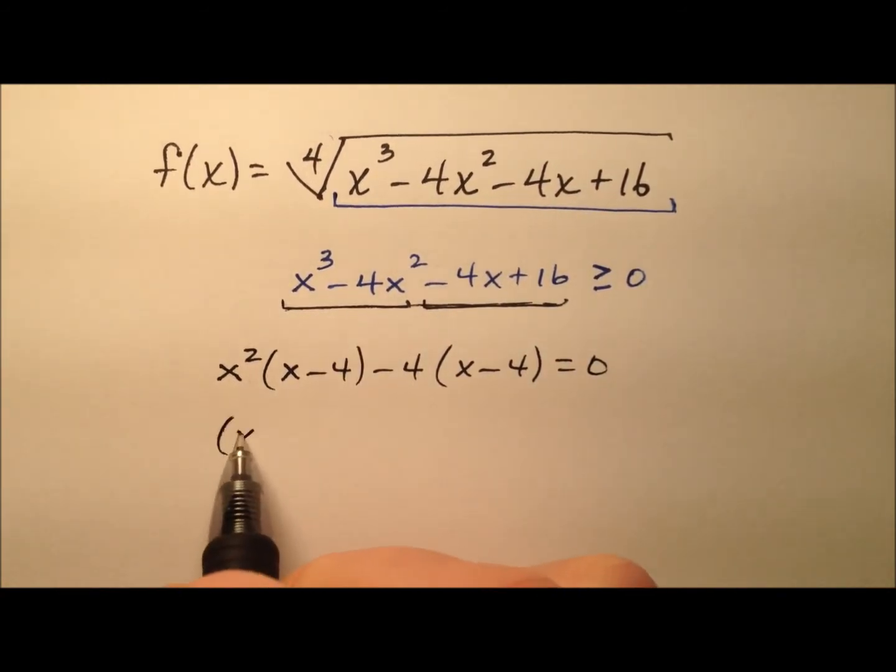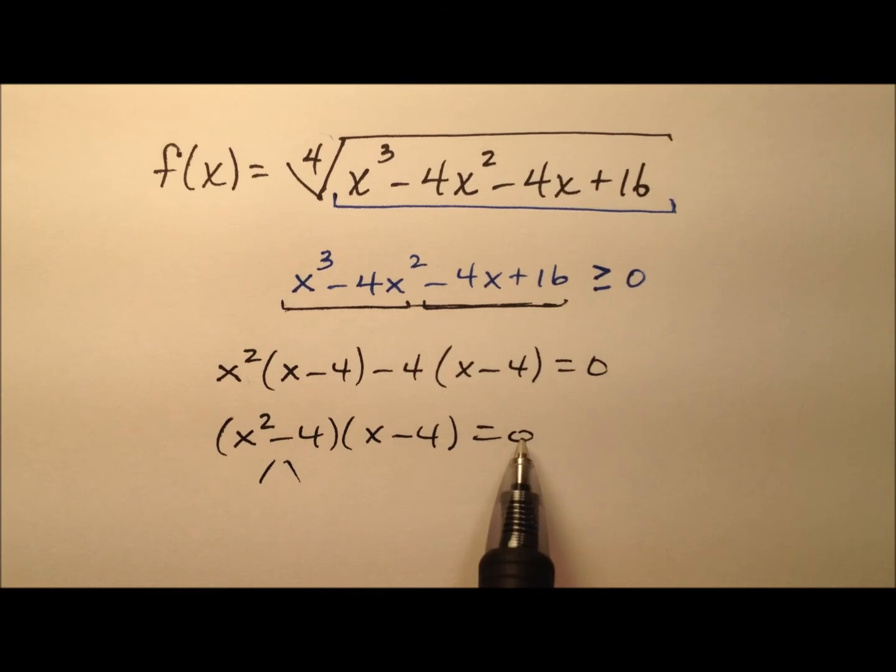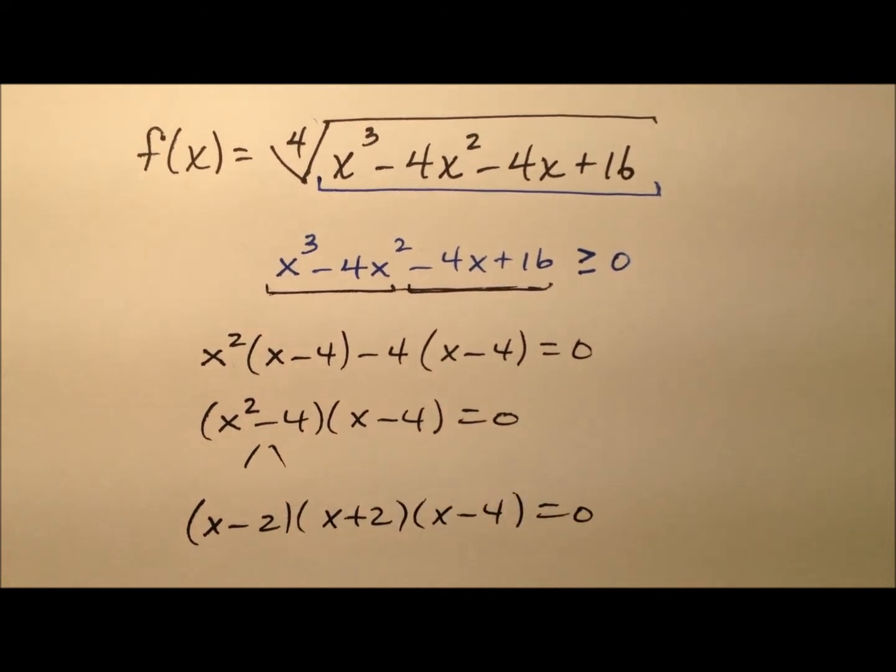So we have x squared minus 4 times x minus 4, which of course this can factor down as the difference of squares here. So x minus 2, x plus 2, x minus 4, all of that equals 0.